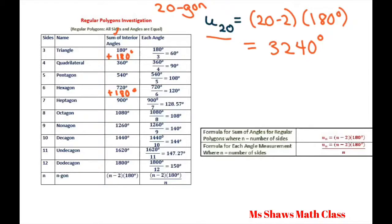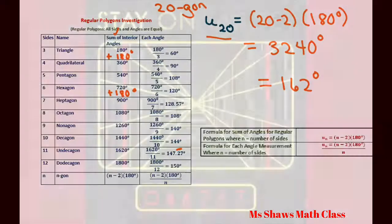So the sum of the interior angles would be 3240 degrees. And to get each angle separately, you just divide that number by 20, and so each of those would equal 162 degrees. And right here, this should be repeating 27 degrees. And that's it. Thank you, have a nice day, bye!